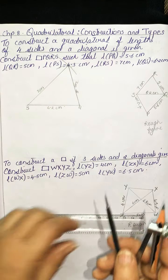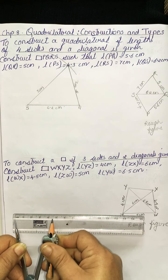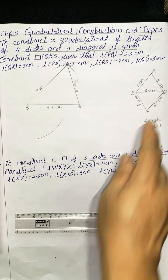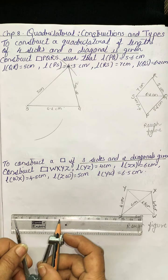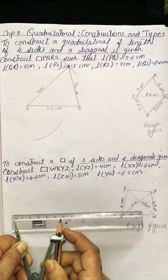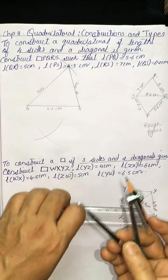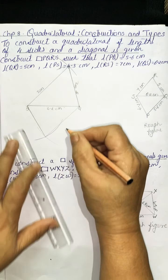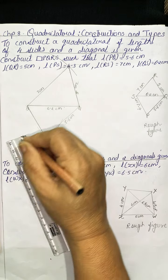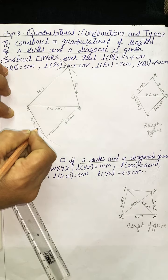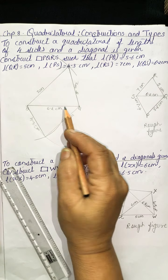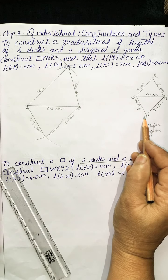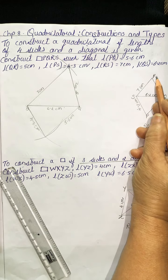SP is 4.3 cm, so take SP as 4.3 cm, keep the pointer on S and draw an arc. PQ is 5.6 cm, so take 5.6 on the compass. Draw these two segments. Label this as 5.6 cm and this as 4.3 cm. You can draw this vertically or take SQ up here as 6.2. You can label it either clockwise or anticlockwise as P, Q, R, S — that type of figure is also correct.